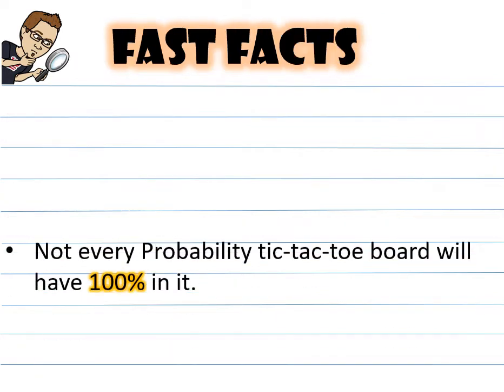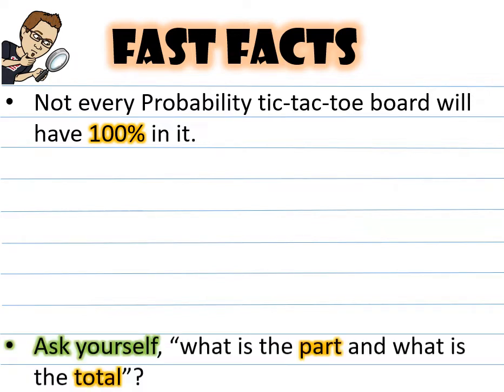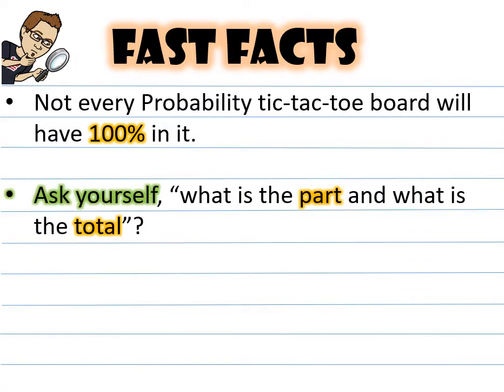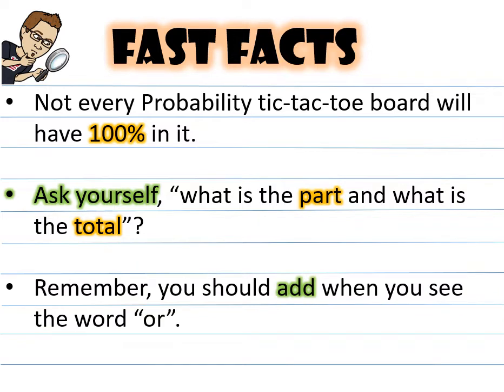Some fast facts about probability: not every probability tic-tac-toe board will have 100% in it. Ask yourself what is the part and what is the total. Remember you should add when you see the word 'or.'